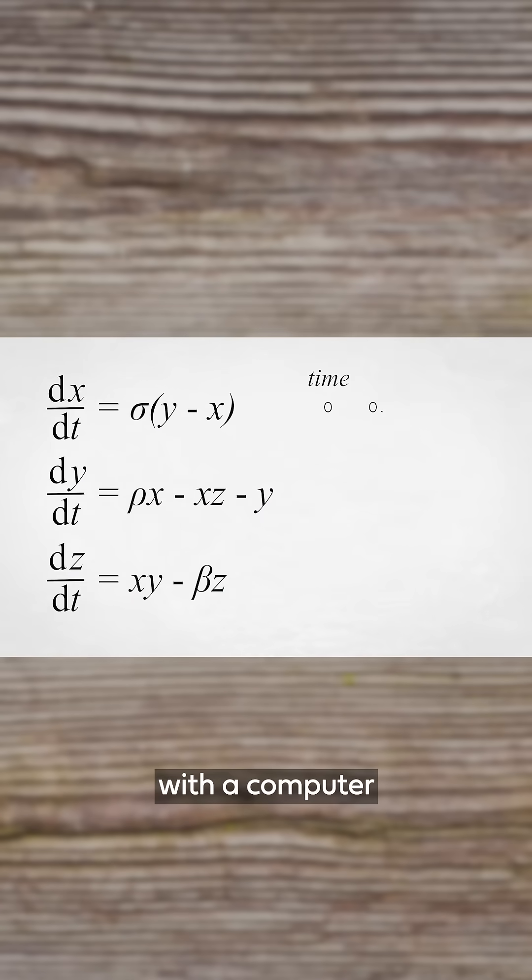The way you solve these equations with a computer is by starting at some initial set of values like x equals 0, y equals 1, z equals 0, and then moving time forward by some small fraction and calculating the change in x, y, and z. Those then become your new starting values and you repeat.